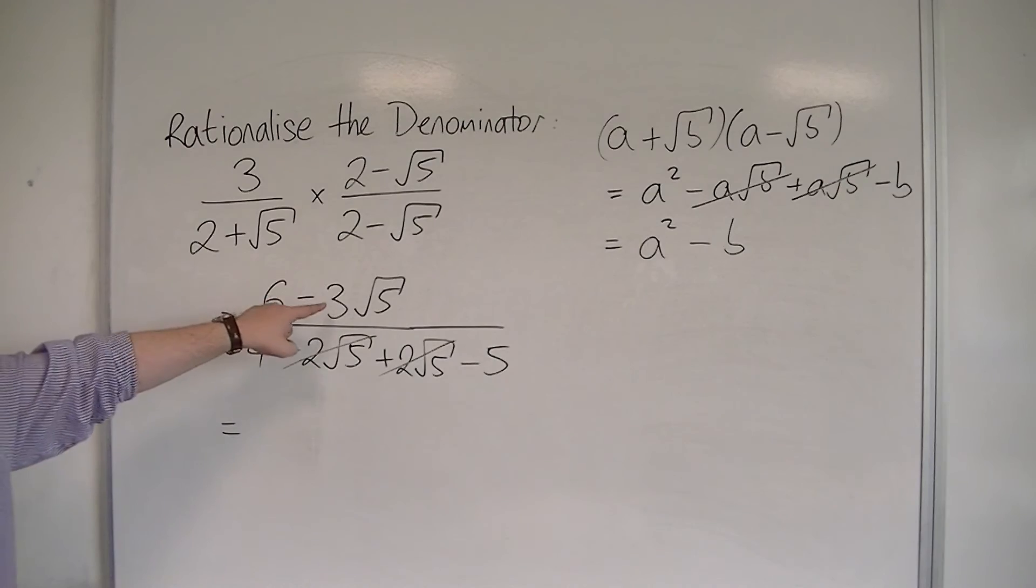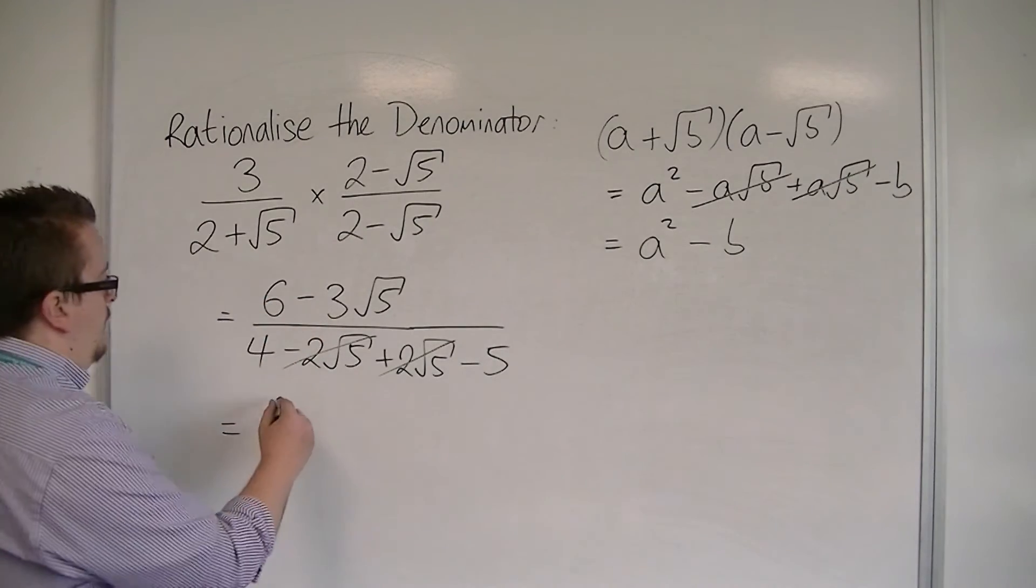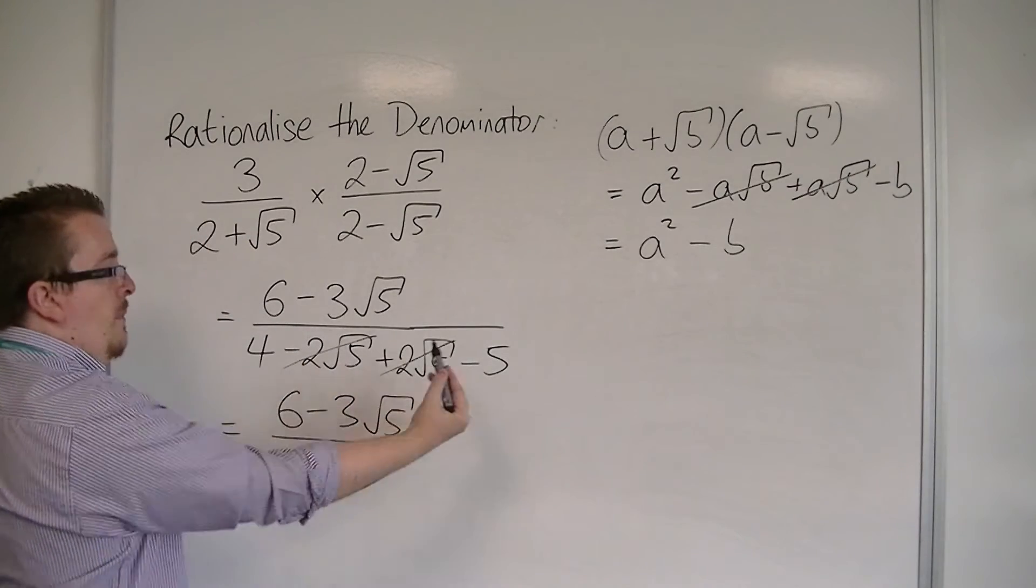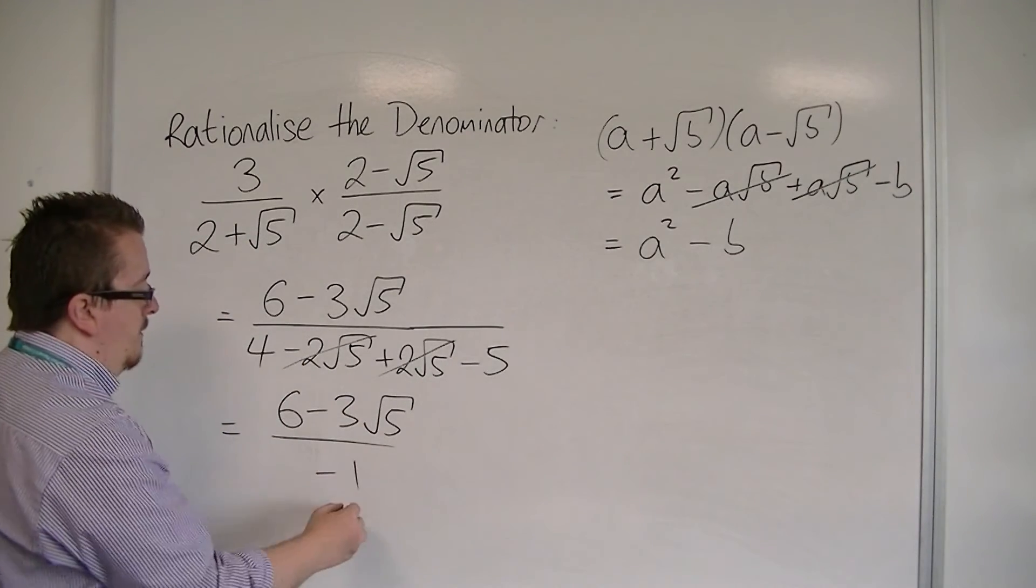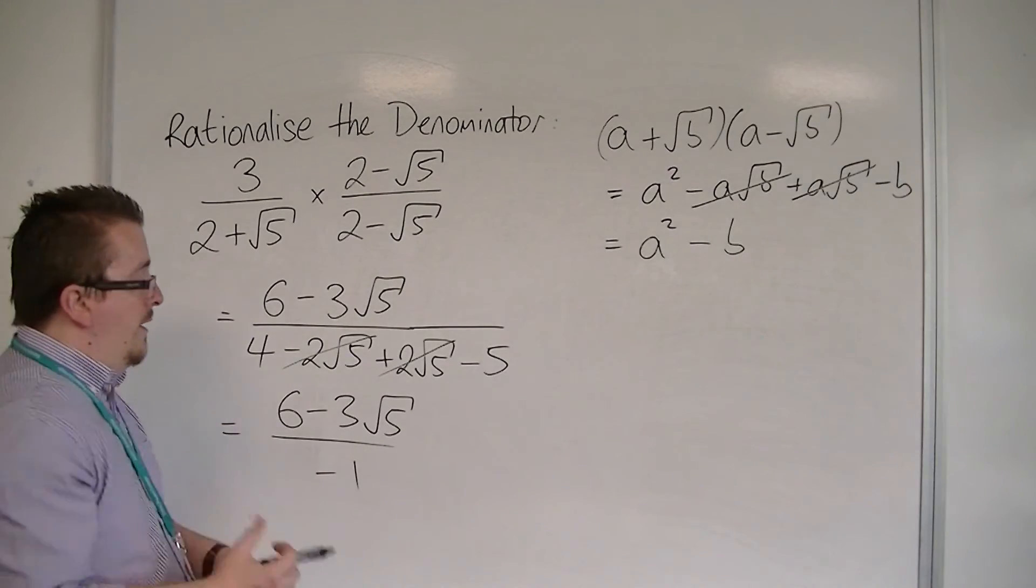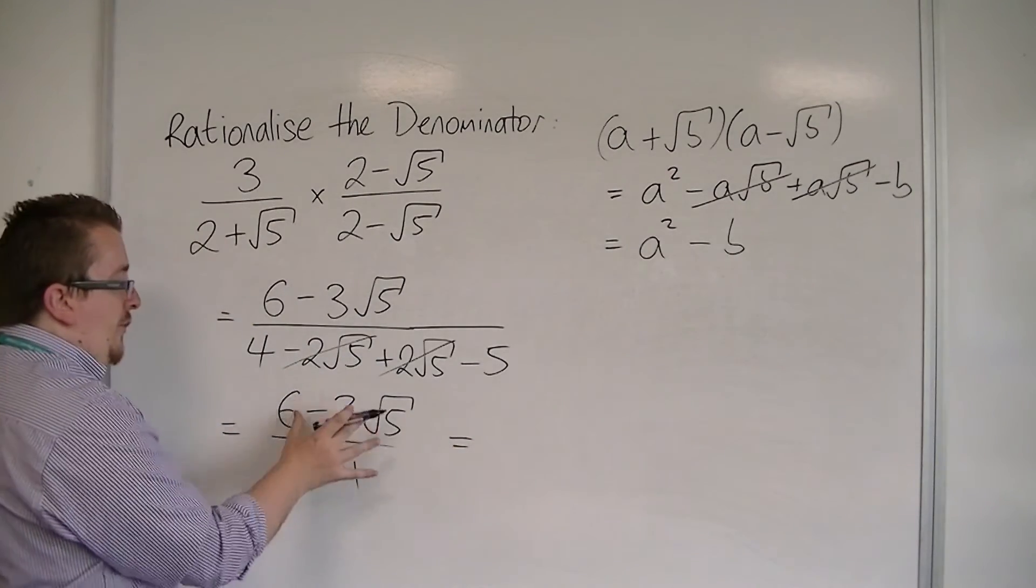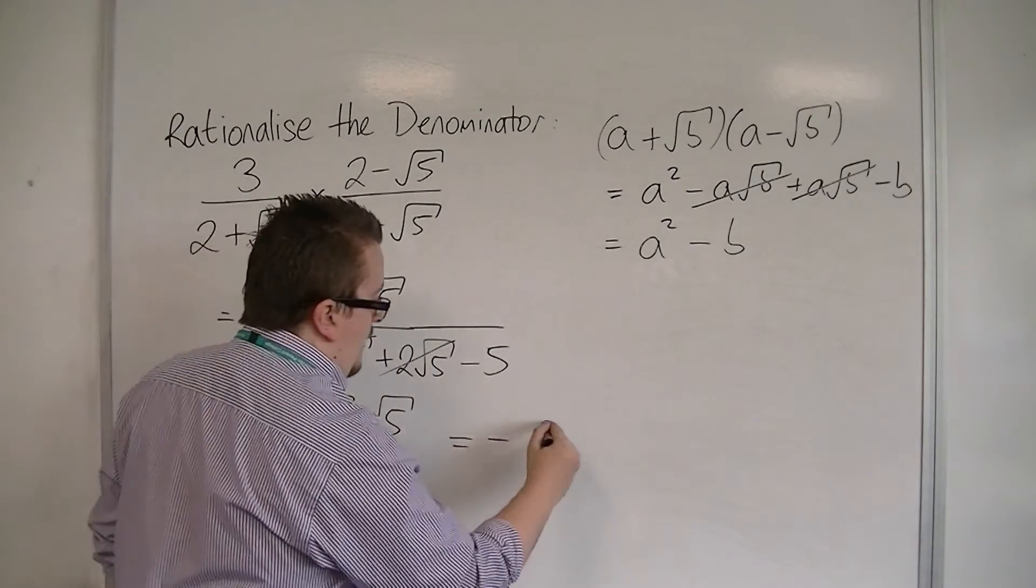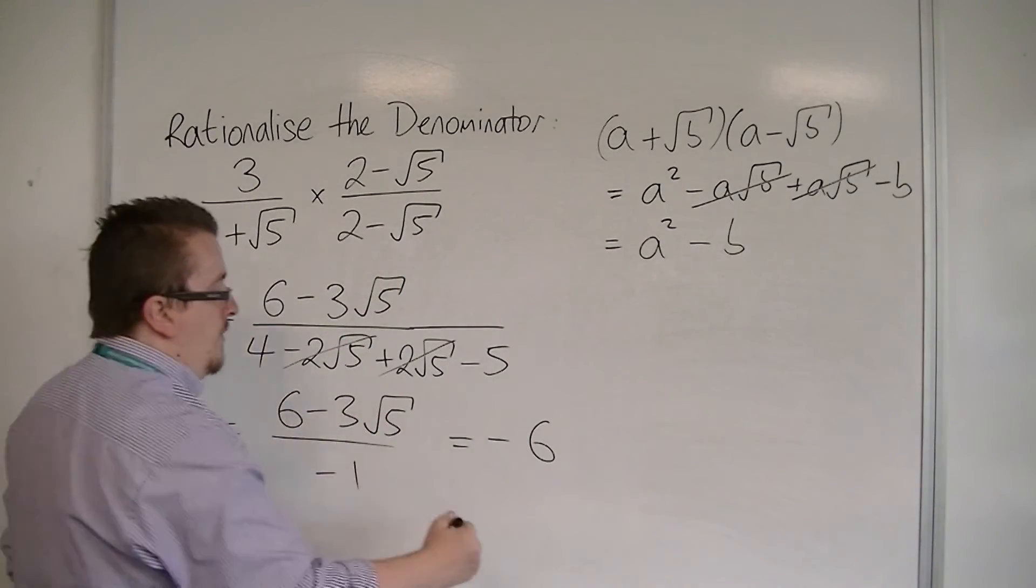So I'm left on the numerator with 6 minus 3 root 5 over 4 minus 5, so minus 1. Now, if you're dividing through by that minus 1, what it's going to do is just change the sign of these terms. So we get minus 6 plus 3 root 5.